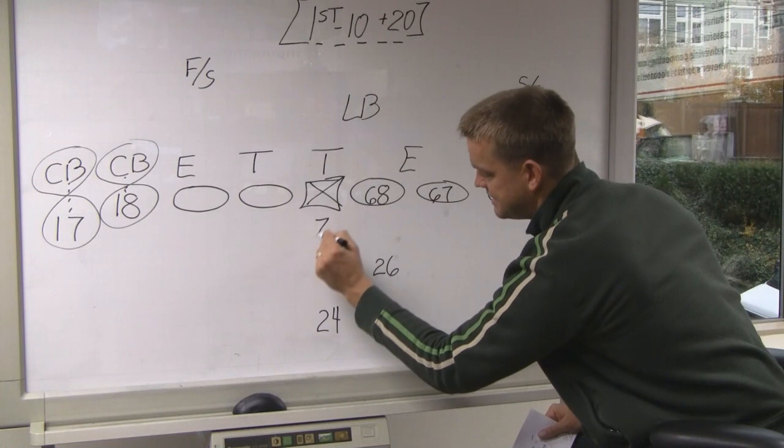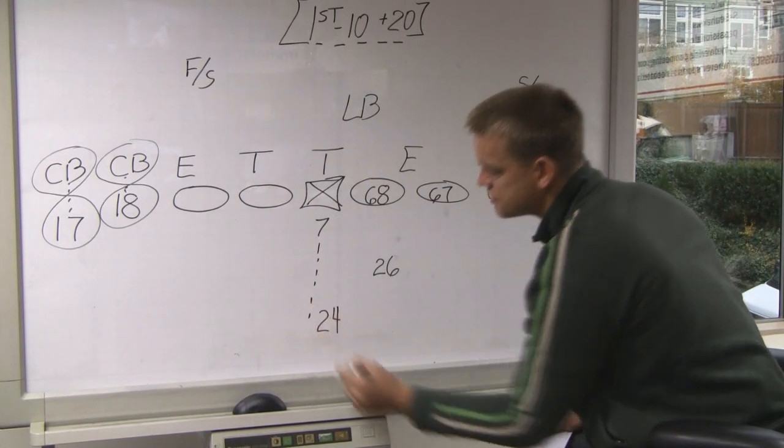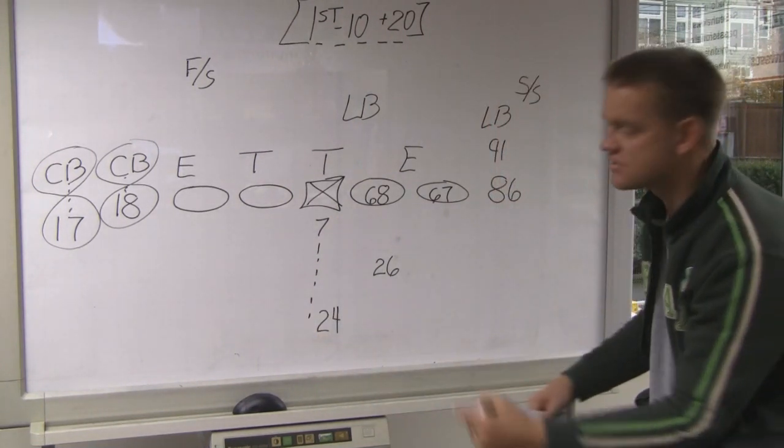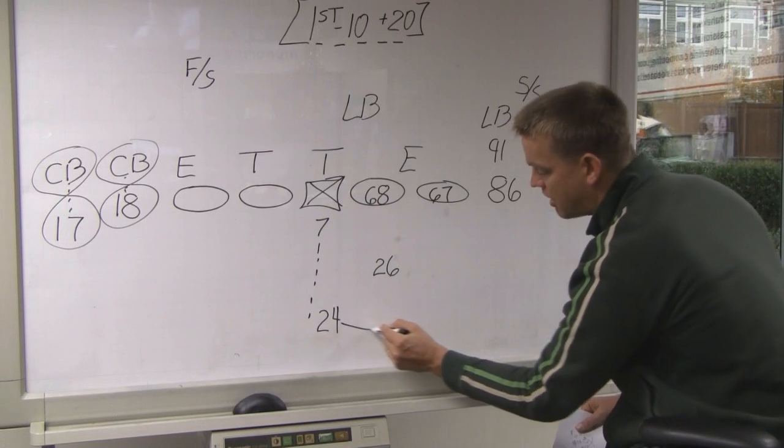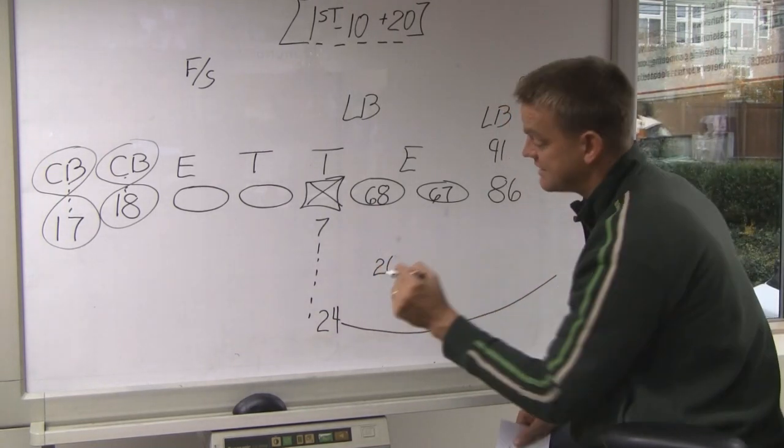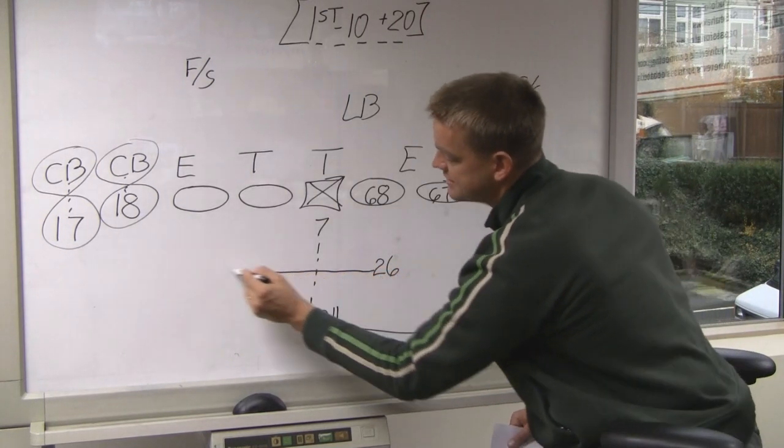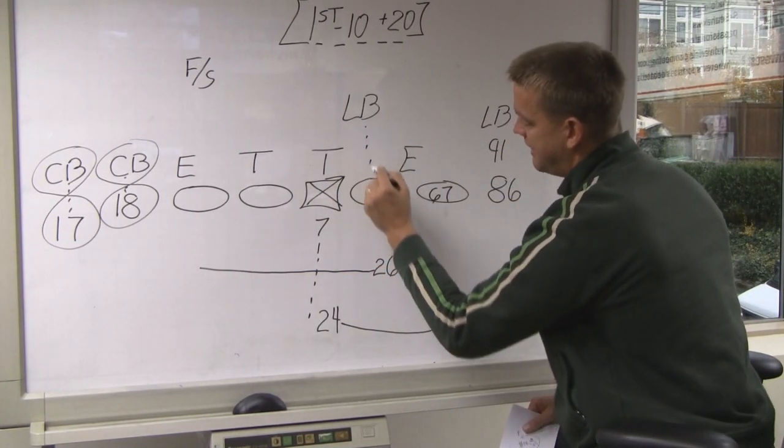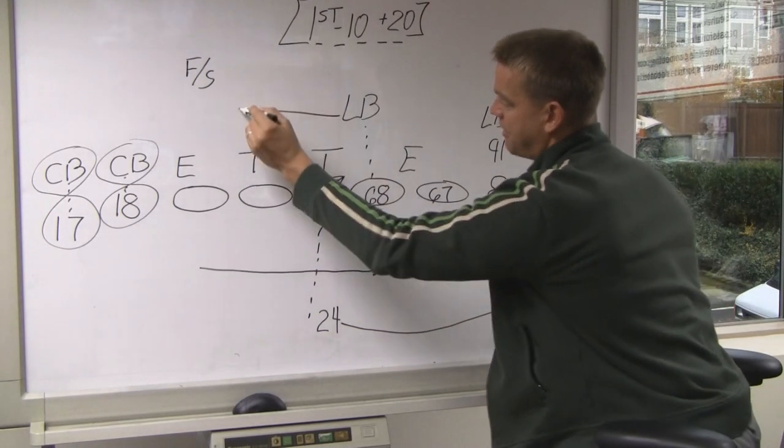So they end up running, T-Jack under center, they end up running a little swing screen, a little man swing screen where Marshawn's going to come out of the backfield running the screen pass. Another nice little wrinkle. They get Michael Robinson to come across the formation. Well, what does that do? That takes his man coverage out of the play.